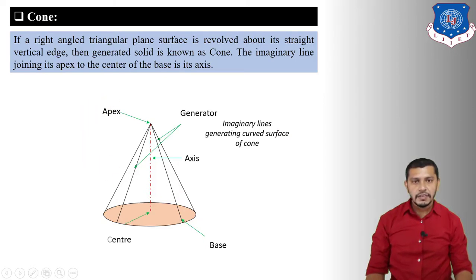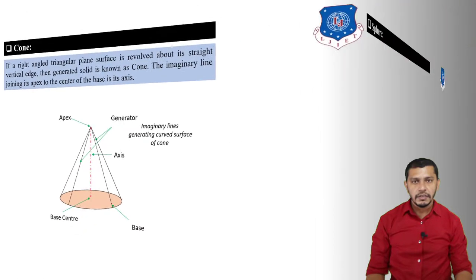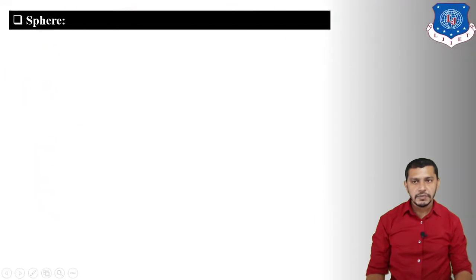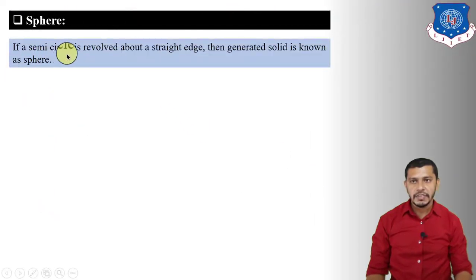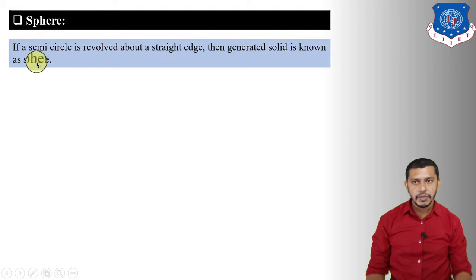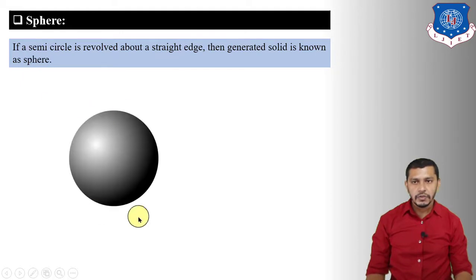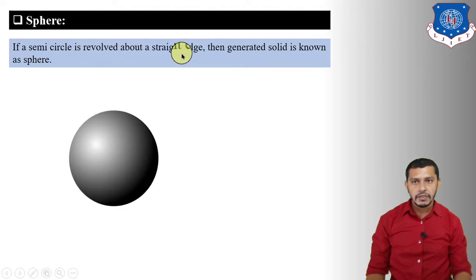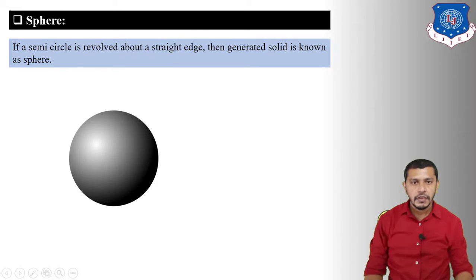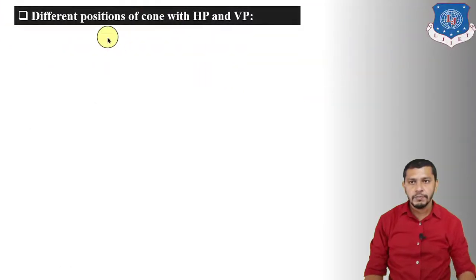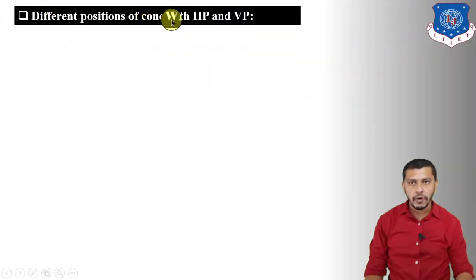A sphere is a solid generated by revolving a semicircle about a straight edge.